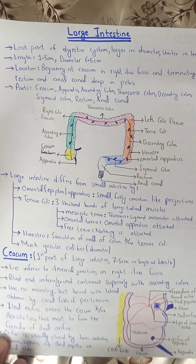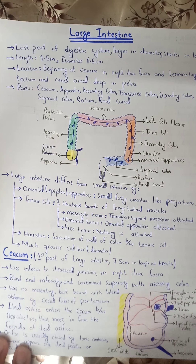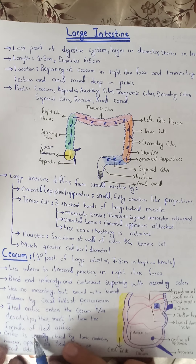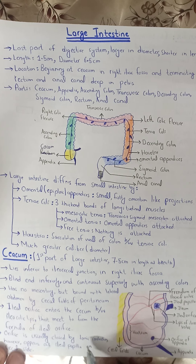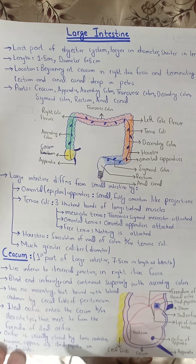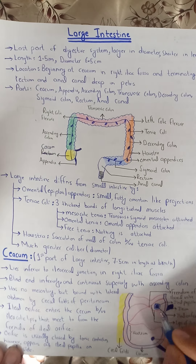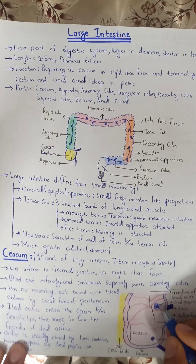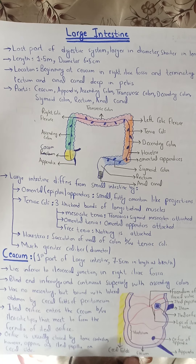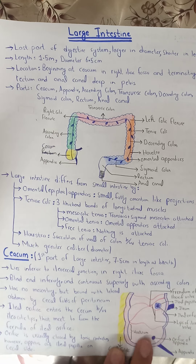Traditionally it was thought that these lips and the frenula controlled flow, but endoscopic research showed this was not fully controlled by this opening. It appears as an ileal papilla on the cecal side, and it is usually kept closed by tonic contraction. The appendix orifice also opens into the cecum.